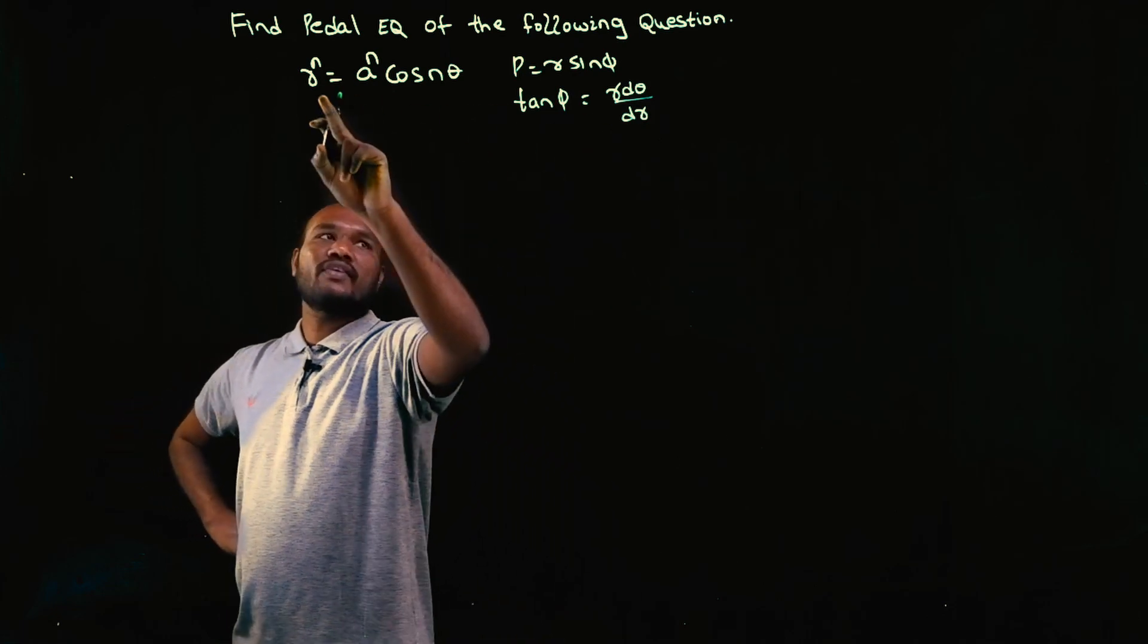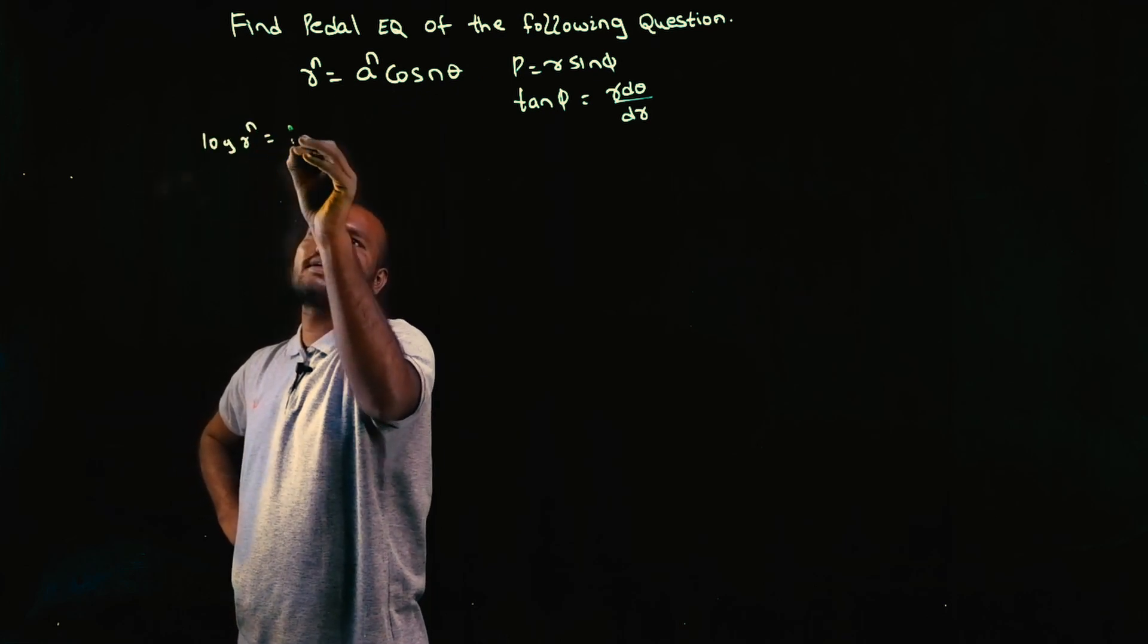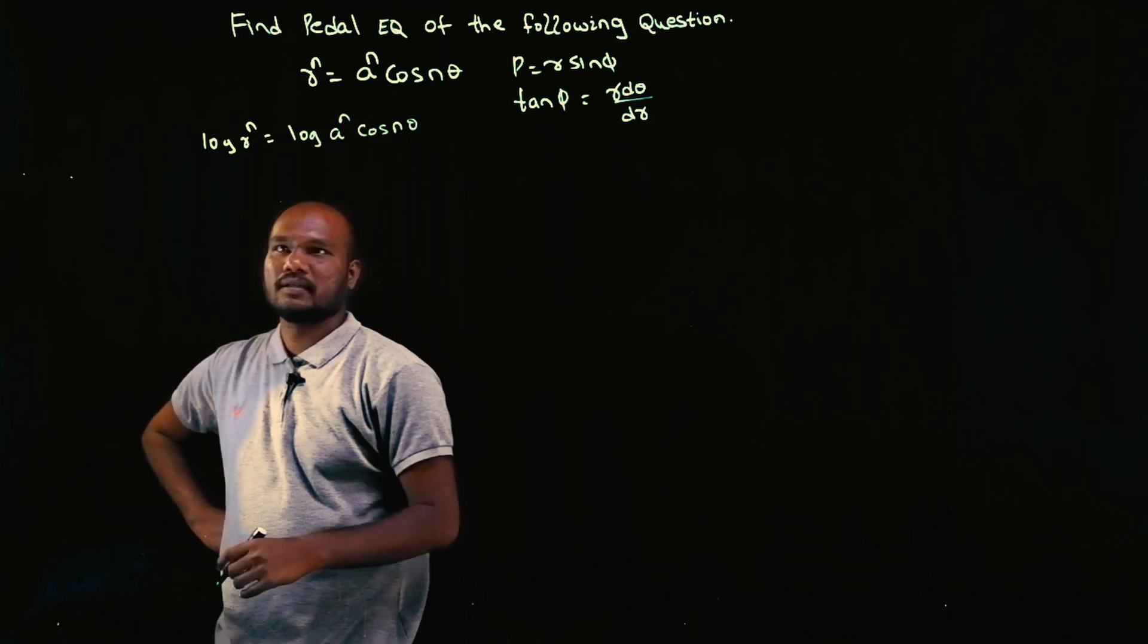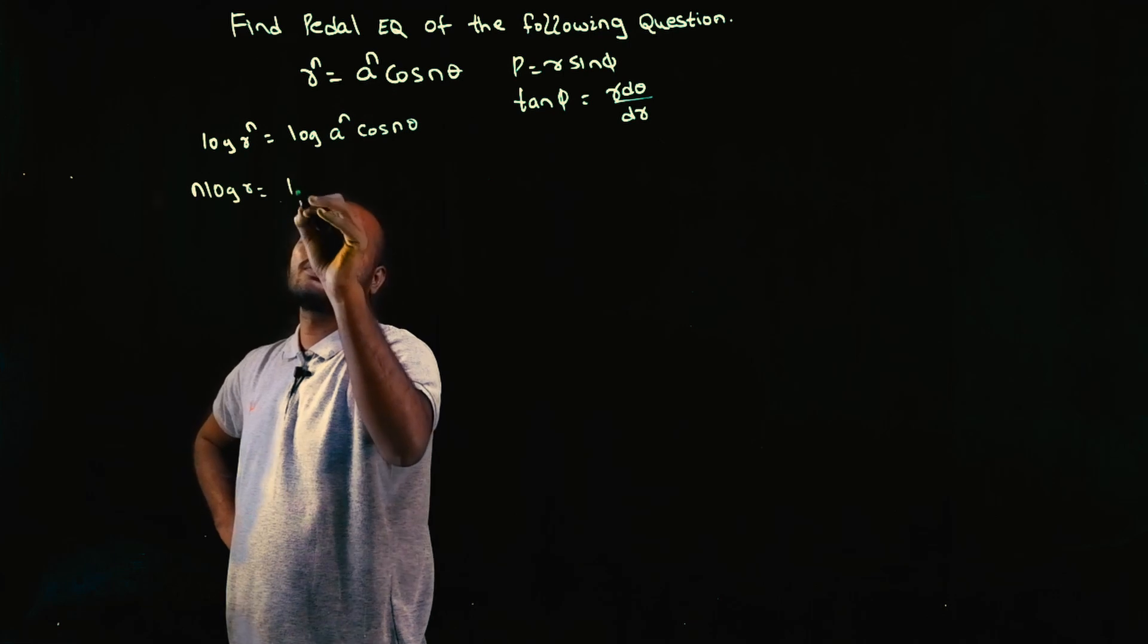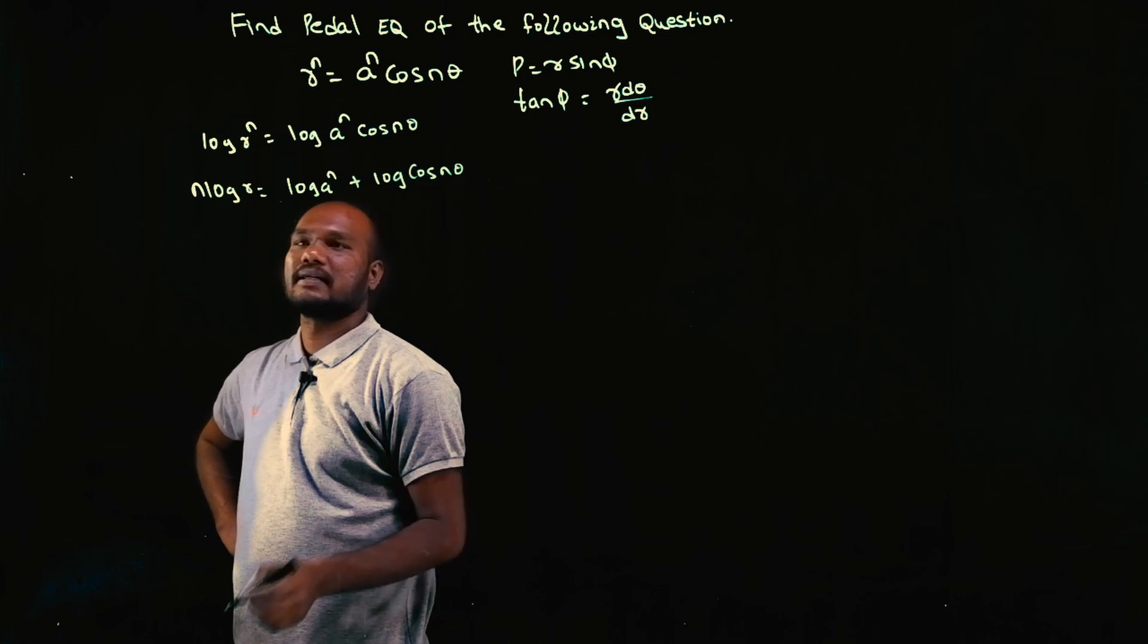So to find phi, we have to find R prime. R prime is not given. So let's take log on both sides. So log R^n equal to log of A^n cos n theta. N will come front: N log R equal to log A^n plus log cos n theta.